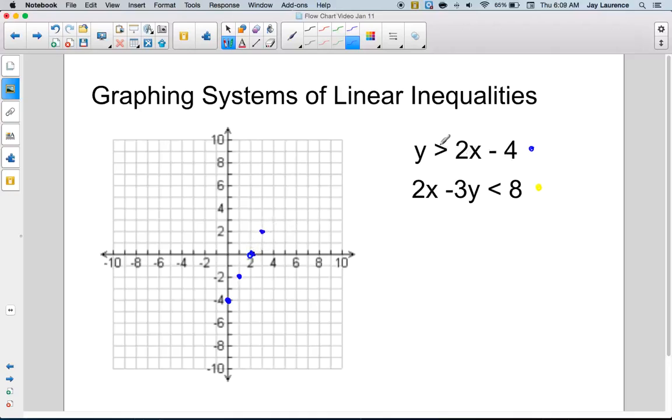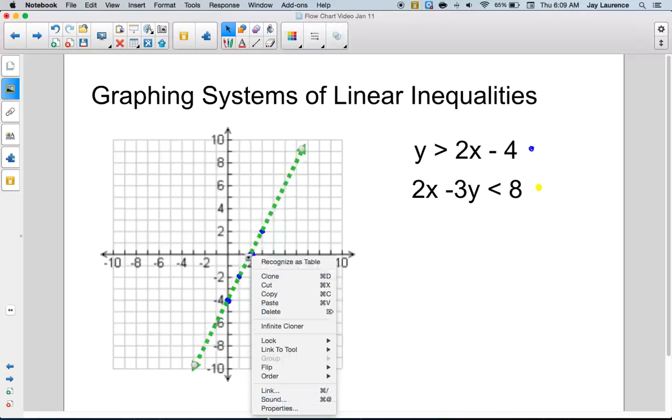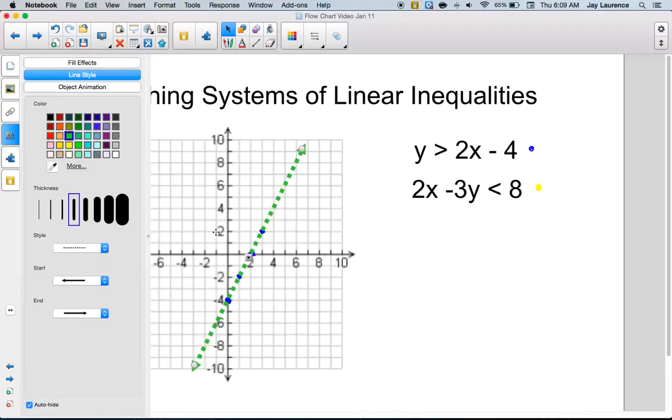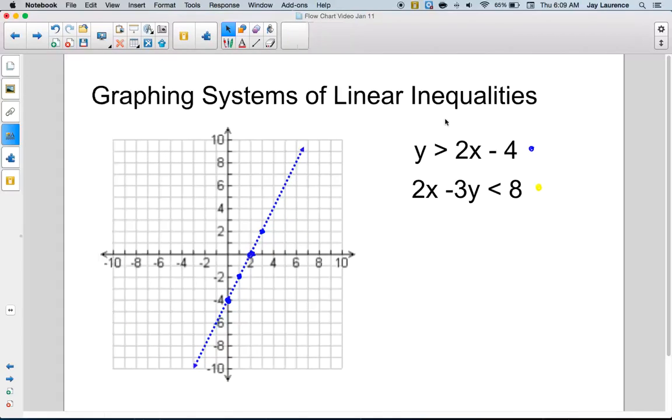Now, it's not equal to, so I'm gonna need a broken line. And so, I'm gonna get my broken line out here. Let me make this line extend. And then, I have to remember to do my shading, right? To do my test point. There we go, maybe I'll make that line a little bit thinner. Okay, so my test point, the line does not pass through the origin.